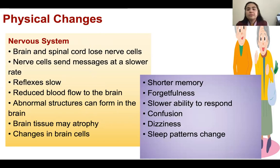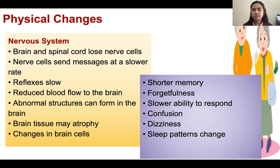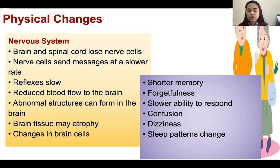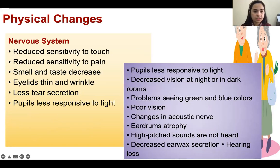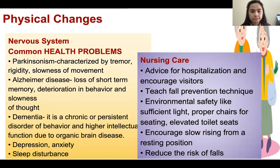For the nervous system, they have problems like shorter memory, forgetfulness, and slower ability to respond — such as dementia and Alzheimer's disease — as well as confusion, dizziness, and changes in sleep patterns.